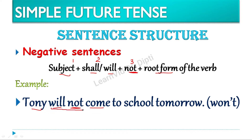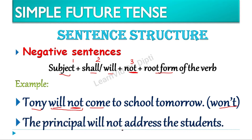Aur yaha par will not ki contraction hum use kar sakte hain — won't. Friends, remember contractions are always used in informal writing. One more example: The principal will not address the students. The principal is the subject, then comes will, then not, and address is the root form of the verb. So by this way, we can frame the negative sentences in simple future tense.